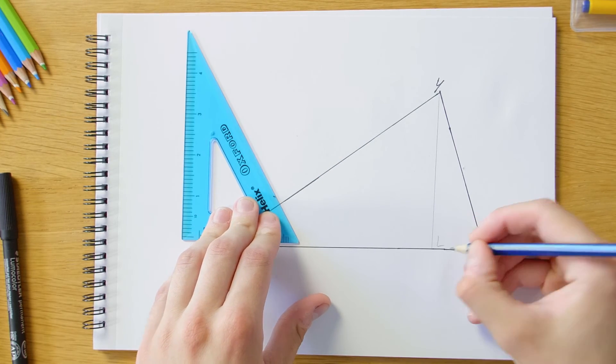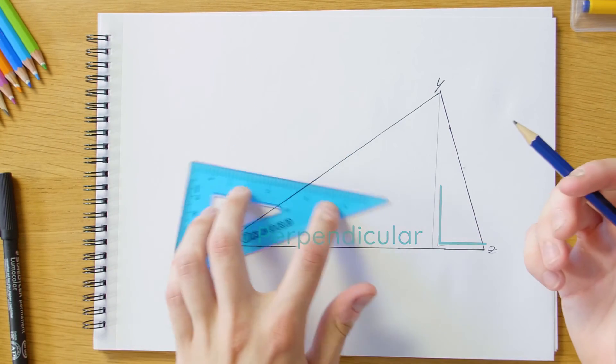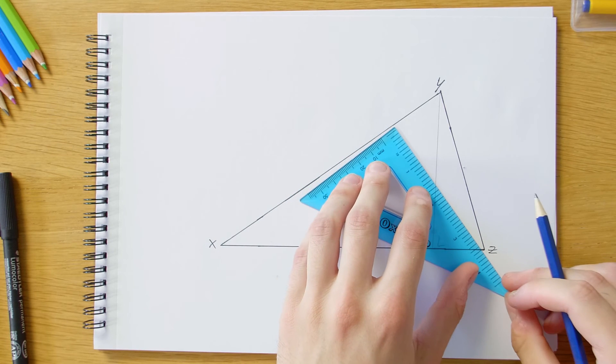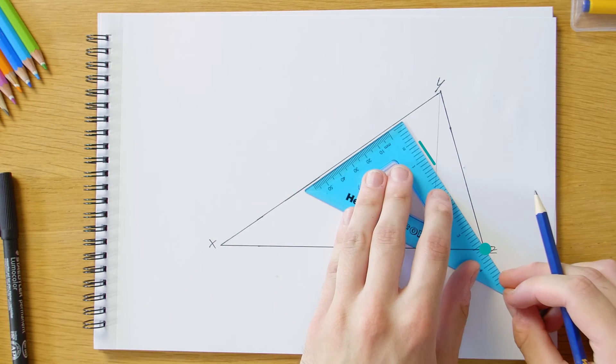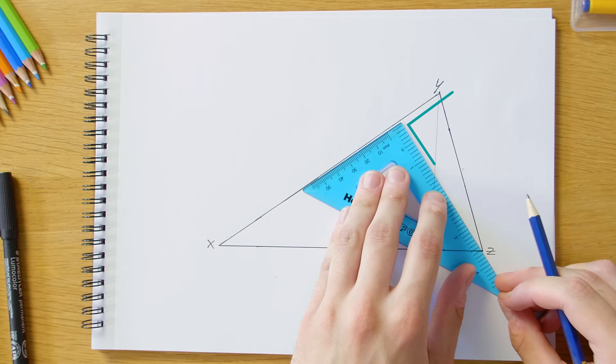And that means that this angle is going to be 90 degrees. And now you can choose any other side. I'm going to choose the side XY and go through the vertex Z. So just line up our set square with this side XY and draw this line here as well.